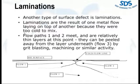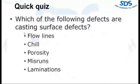So which of the following defects are casting surface defects? You can write in the chat box: flow lines, chill, porosity, misruns, or laminations.